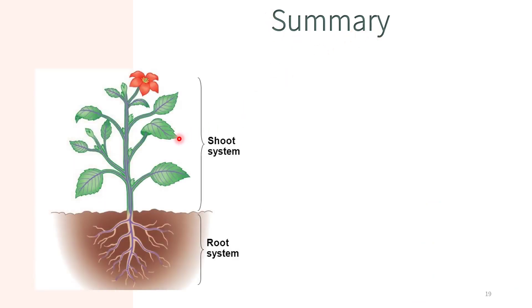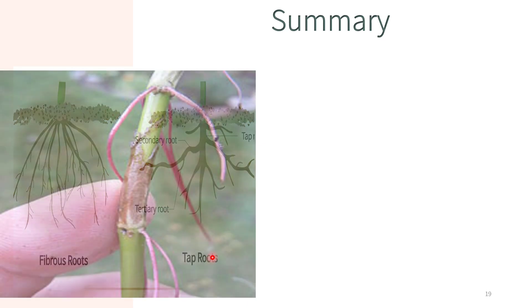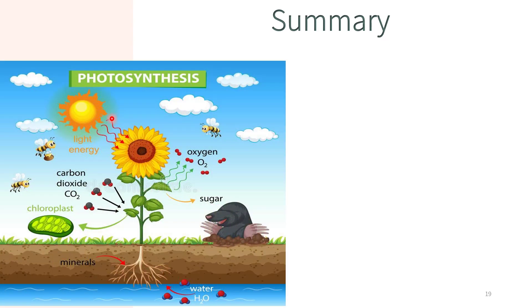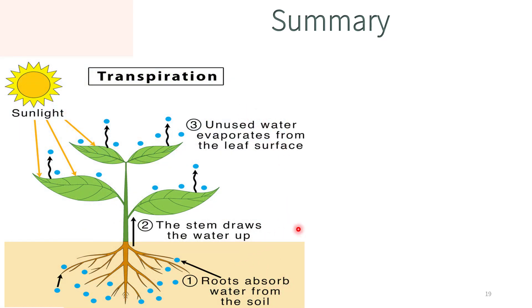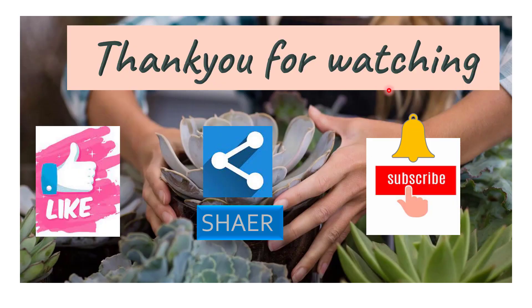Now let's discuss the summary of the video. We have studied about the shoot system and root system of the plant. In the root system, we studied two types of roots: fibrous root and tap root. Then we studied about the stem, the leaves, photosynthesis, and transpiration. After that we studied about the products we get from plants: food, wood, fibres, medicine, perfume, rubber and paper. Thank you for watching! Please like, share and subscribe to my channel, and don't forget to press the bell icon to get the latest updates.